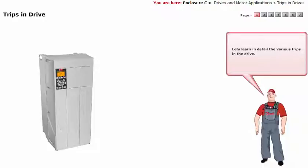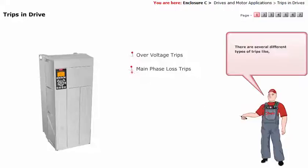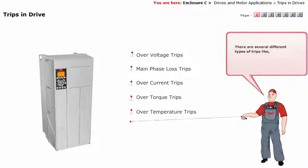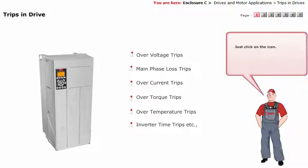Let's learn in detail the various trips in the drive. There are several different types of trips, like over voltage trips, main phase loss trips, over current trips, over torque trips, over temperature trips, inverter time trips, etc. The first two trips are the most commonly occurring trip situations. Would you like to have a detailed description on the various trips in the drive? Just click on the icon.